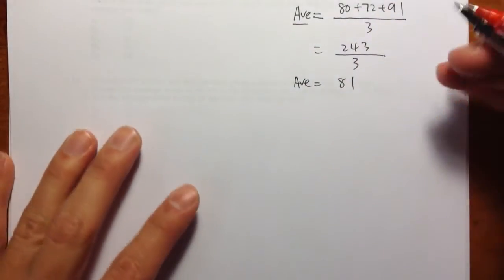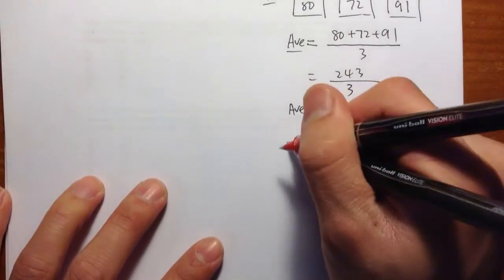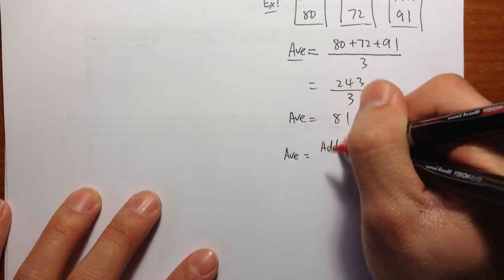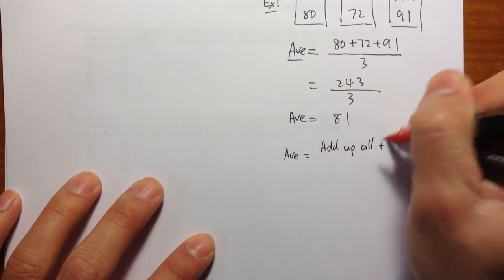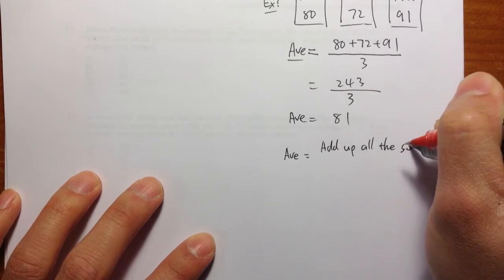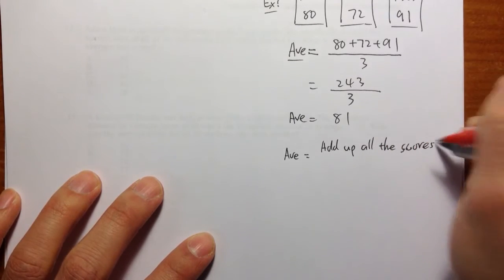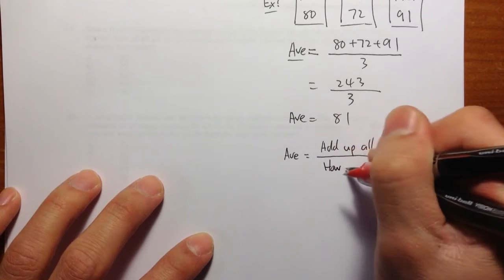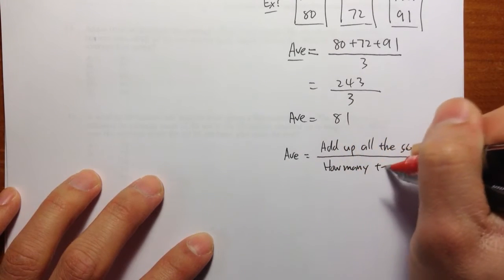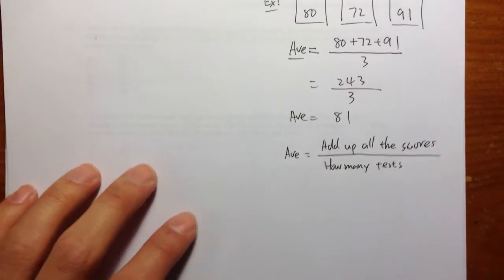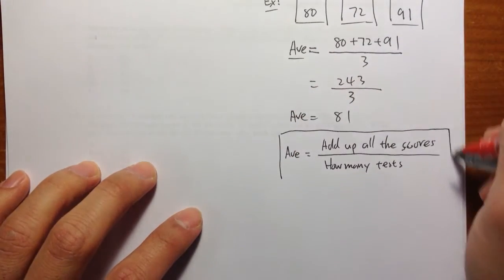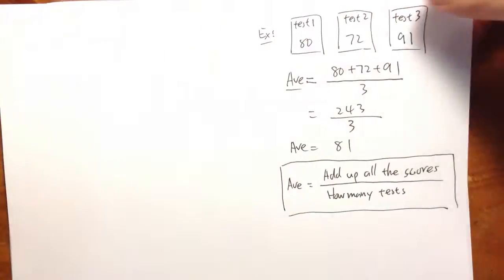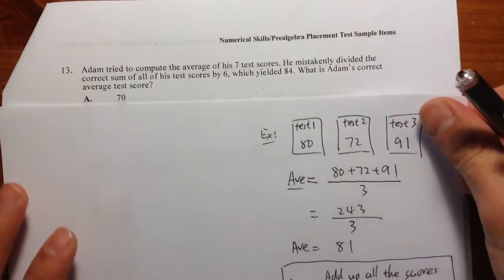So let me summarize what we just did. To find average, we first add up all the scores or all the points of the test. Add up all the scores and divide by how many tests that the person took. This is how we find averages for test scores, and especially to calculate your grades.